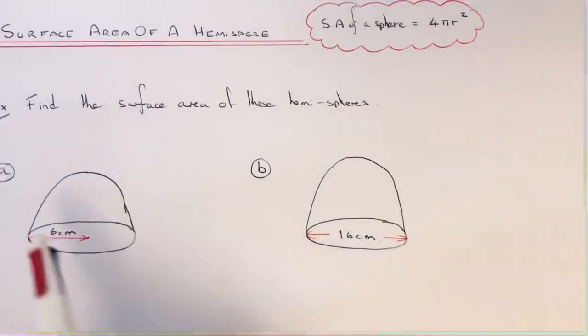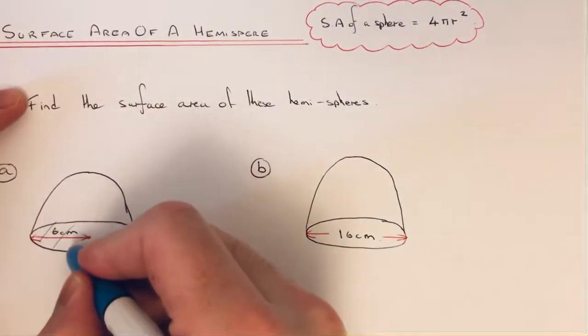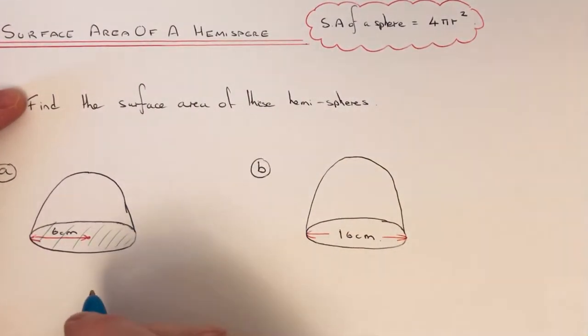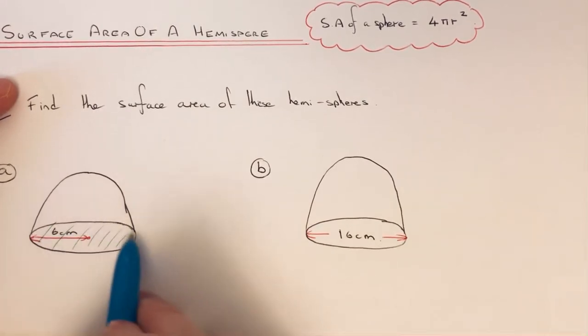So let's have a look at the example here. We're going to find the surface area of this hemisphere, so it has a radius of 6 centimeters. Let's start off with the circular face at the bottom. To work out the area of this face, you just need to use the formula for the area of a circle.